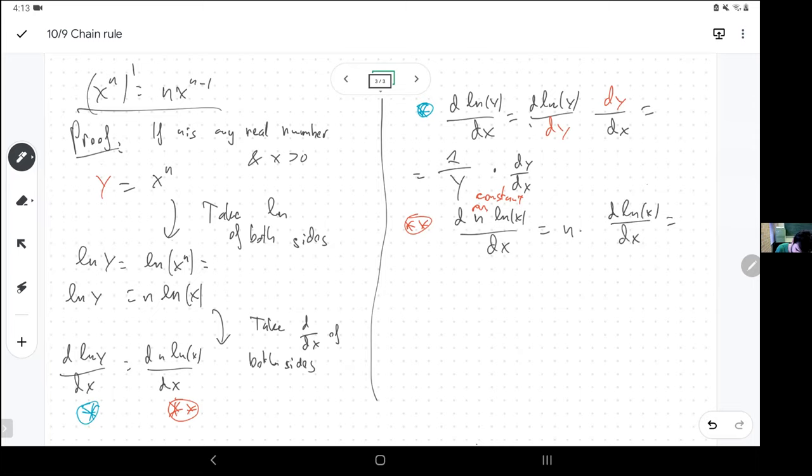So what I have is n times the derivative of the logarithm, which again is something I've just memorized. So if the left side equals the right side, that means that one over y times the derivative I'm trying to find equals n divided by x.